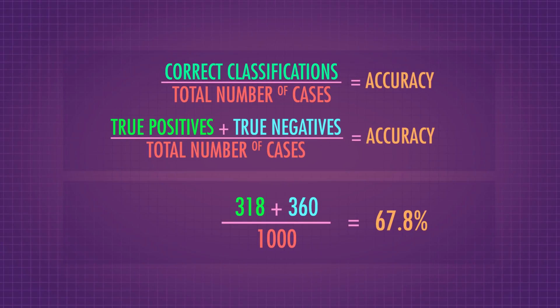Accuracy is important, but it's also pretty simplistic. It doesn't take into account that in different situations we might care more about some mistakes than others. It's important to recognize that in many situations, we want information above and beyond just an accuracy percentage.